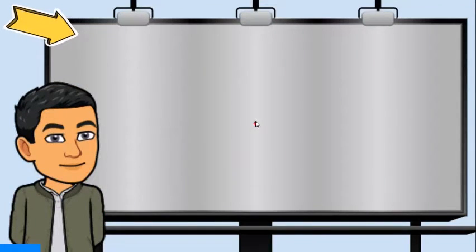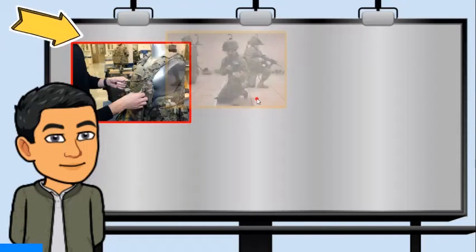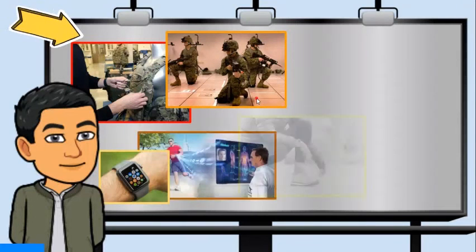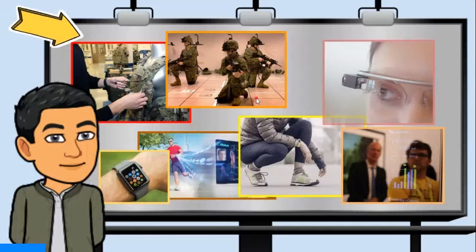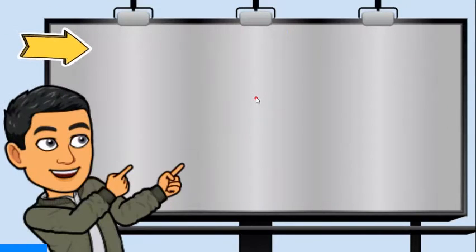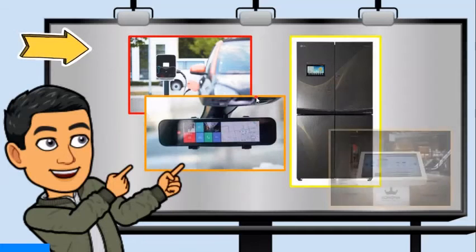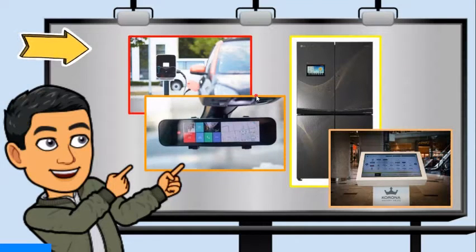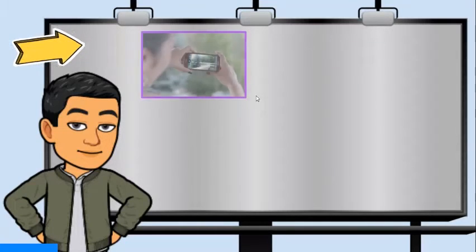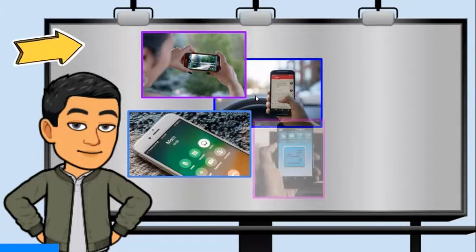This is the idea that almost any device, from clothing to tools, to appliances, to cars, to homes, can be embedded with chips to connect the device to an infinite network of devices. It supports one user to many computing tasks and one device with multiple computing tasks, like a smartphone.